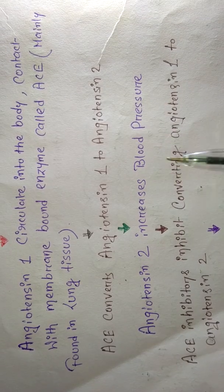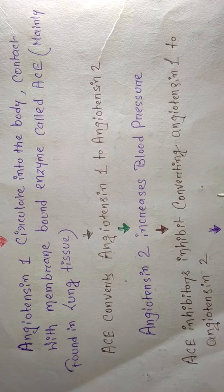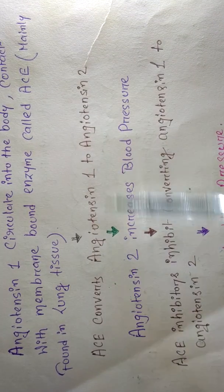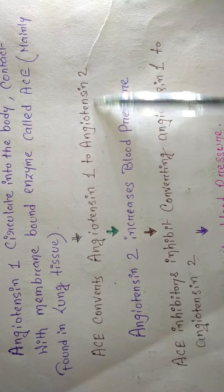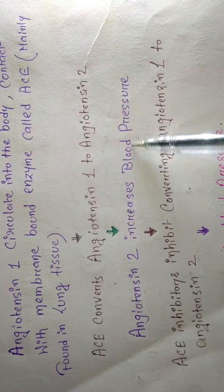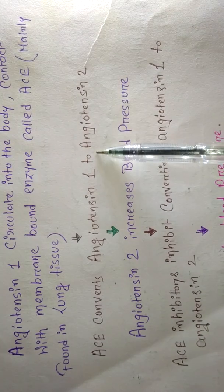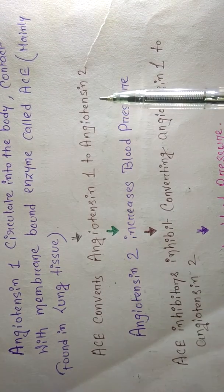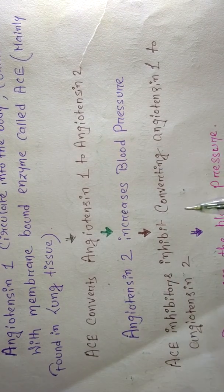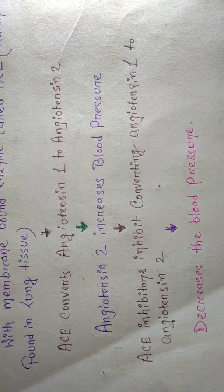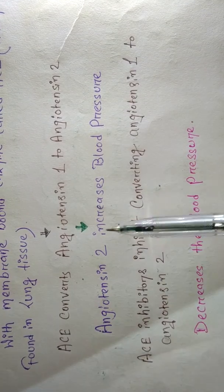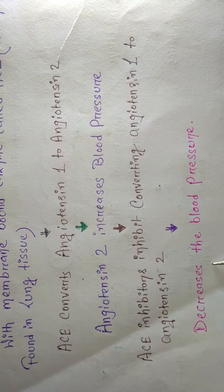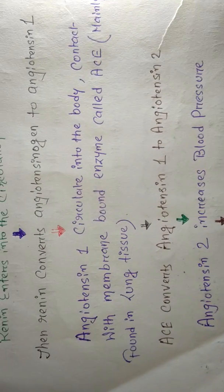Angiotensin 2 increases blood pressure. So in a hypertensive patient, we have to stop ACE from converting angiotensin 1 to angiotensin 2, because angiotensin 2 is mainly responsible for increasing blood pressure. ACE inhibitors block this conversion — if ACE can't convert angiotensin 1 to angiotensin 2, angiotensin 2 will not be produced, and thus blood pressure decreases. I hope that's clear — if you have any doubt, let me know. Thank you.